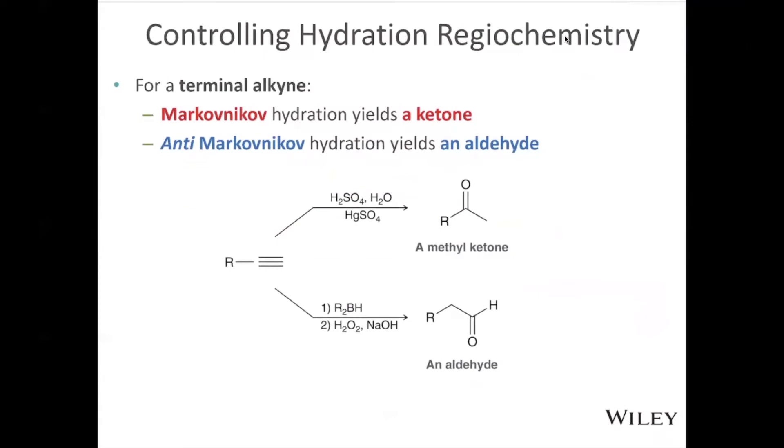So a quick summary of those two reactions for a terminal alkyne. We have Markovnikov hydration gives us a ketone, and that is using the mercury catalyst. We have non-Markovnikov addition giving us an aldehyde, and that is with the boron compound.